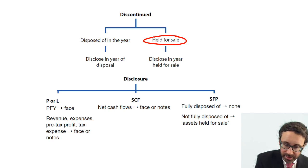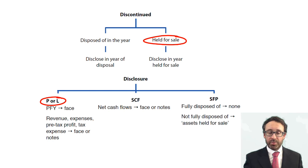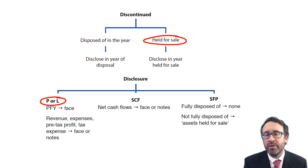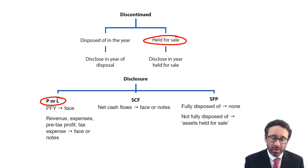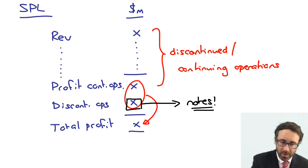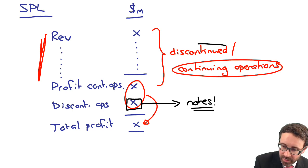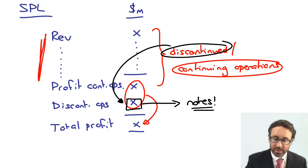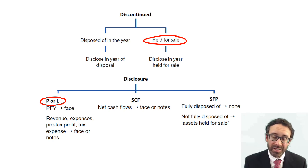The final bit of information — your focus from a numerical perspective is on the profit or loss. On the statement of profit or loss, you disclose everything up to profit for the year on the face. You also disclose the profit for the year from discontinued operations on the face. The detail breakdown you could include on the face as well, but it's easier to include it within the notes. Everything above is continuing, and then you take that discontinued figure, move it separately, and combine the two together to get your total profit. The breakdown of revenue, cost of sales, admin, distribution, pre-tax profit, and tax expense goes within the notes.